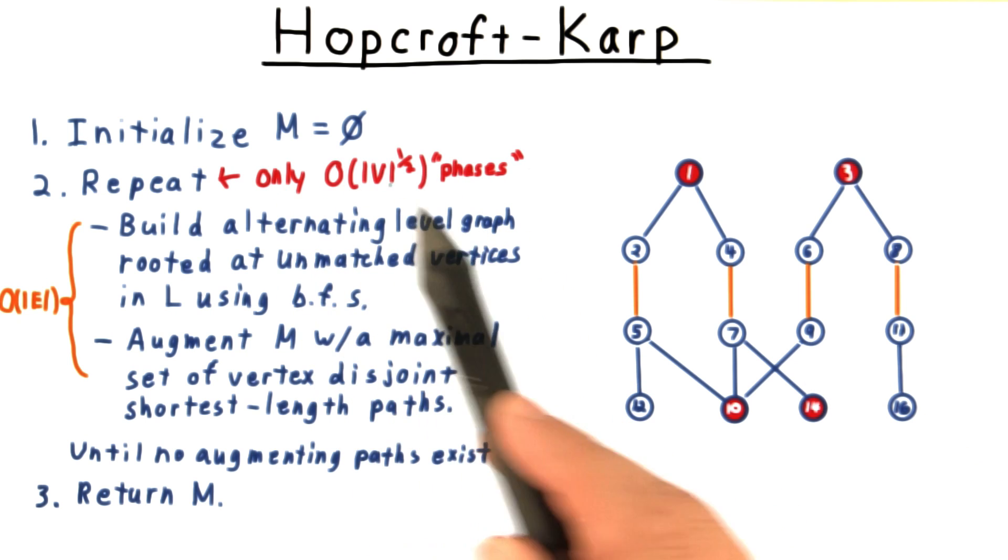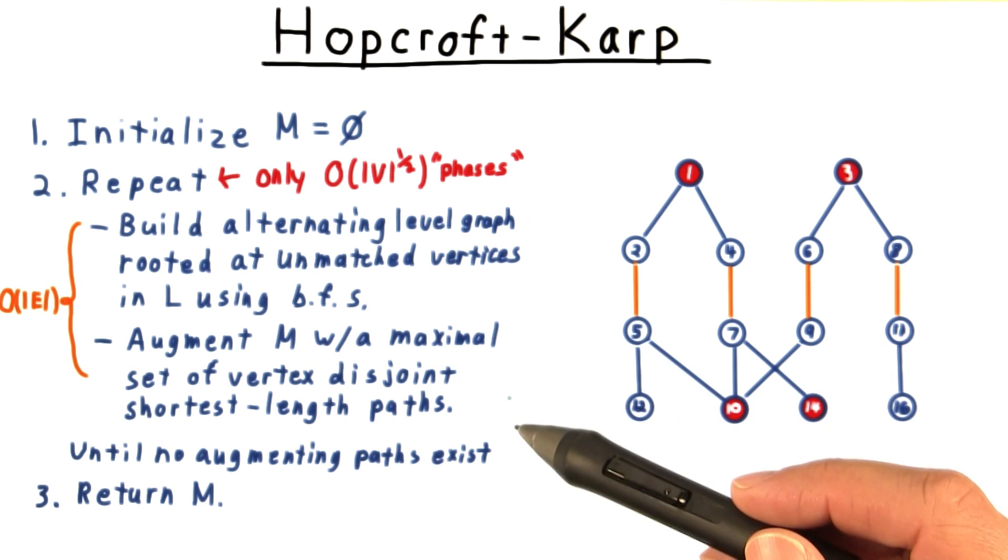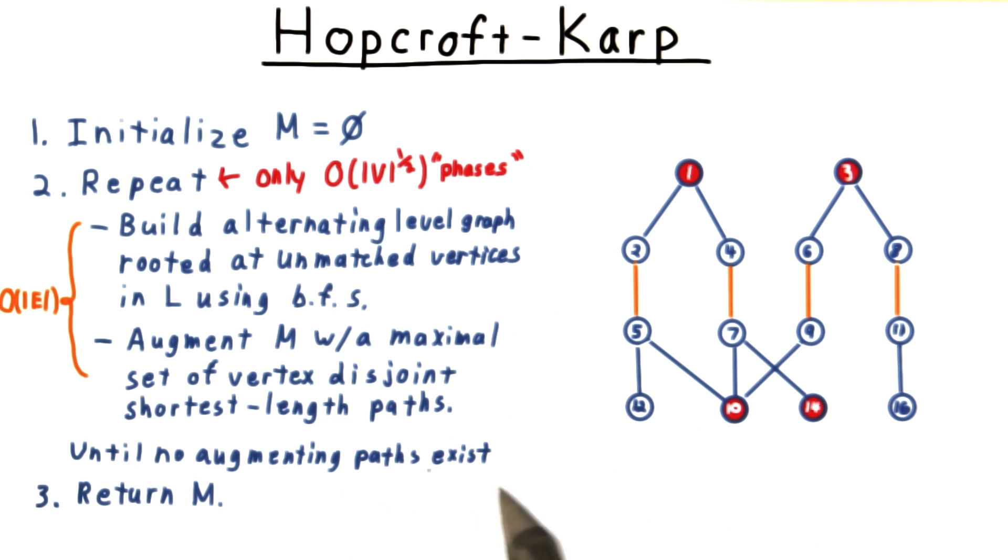The key insight is that only about the square root of v phases are needed in order for us to get to a point where there are no more augmenting paths.